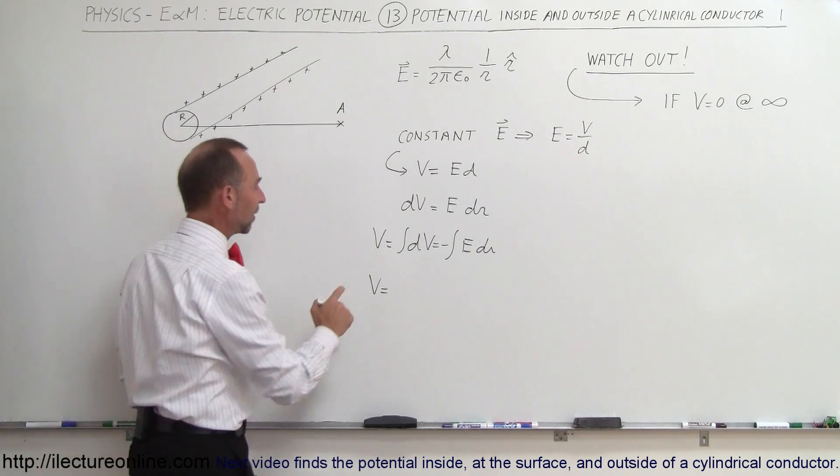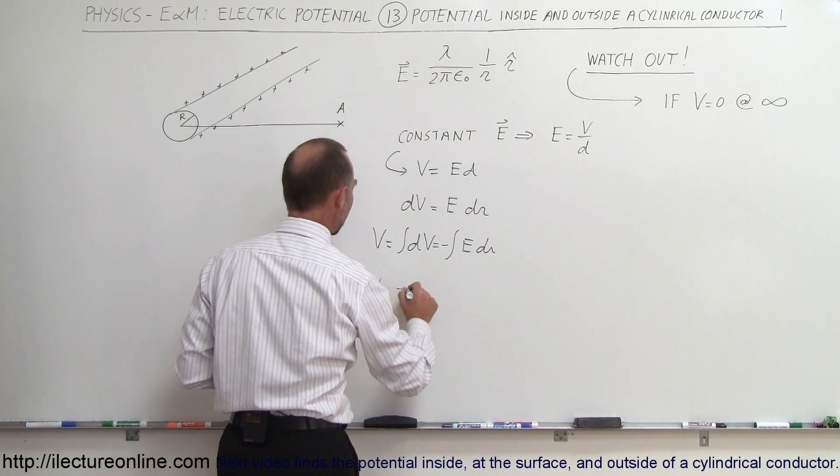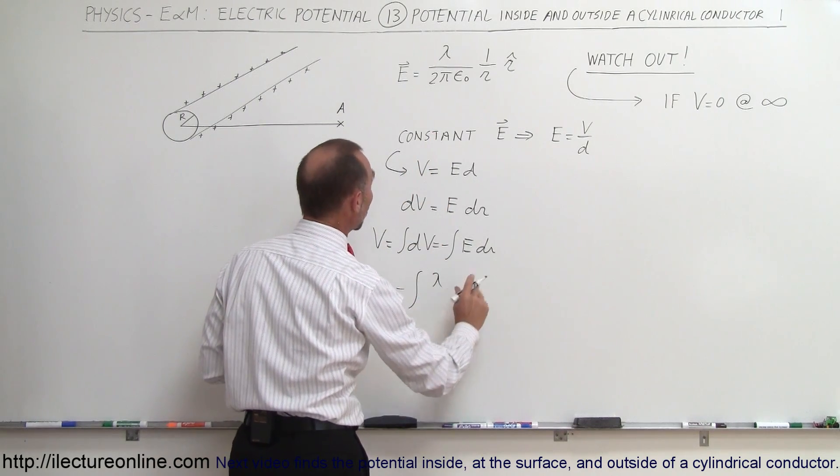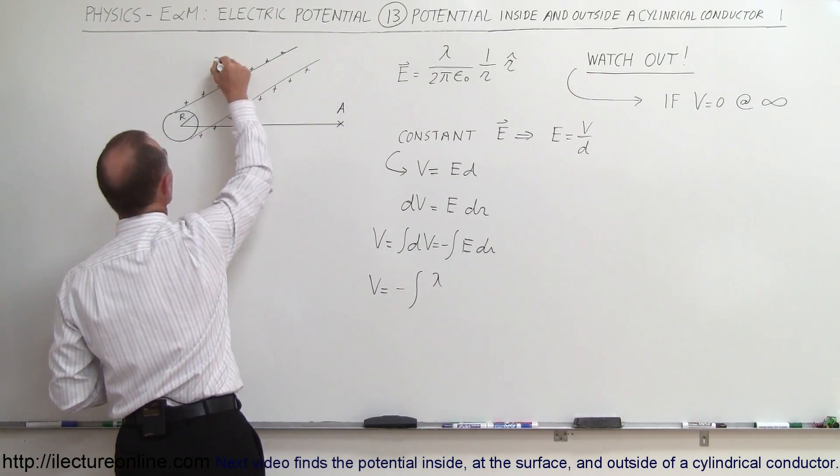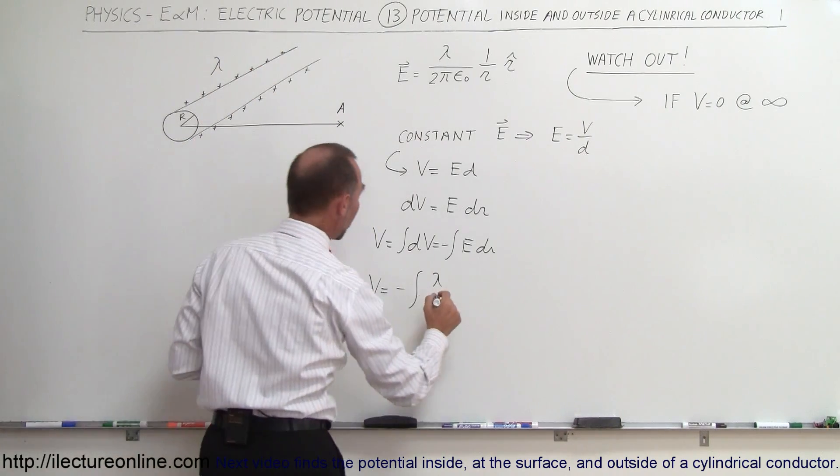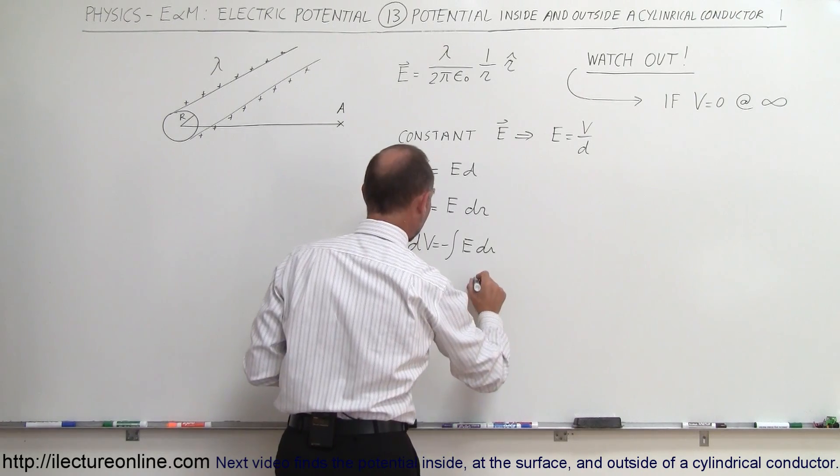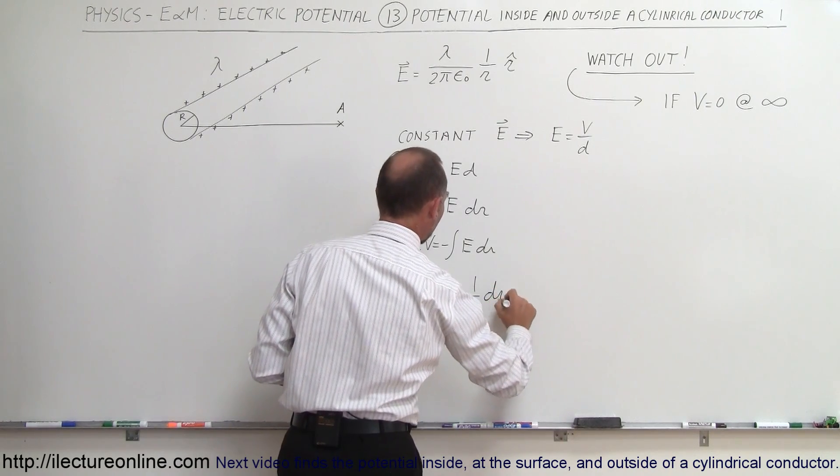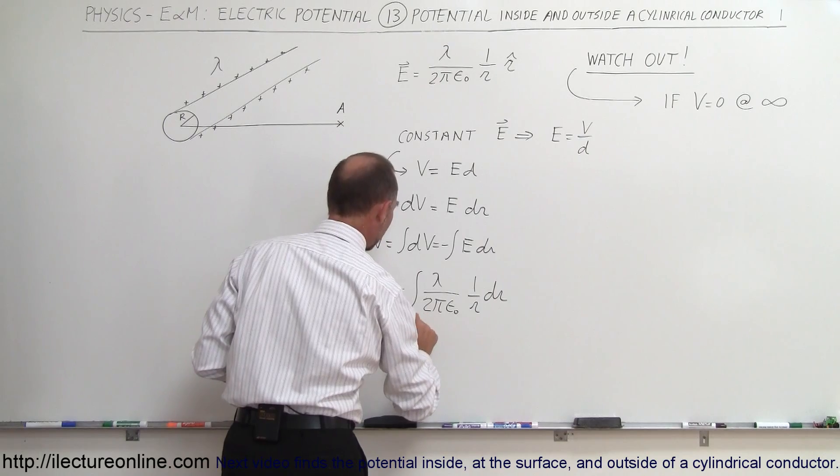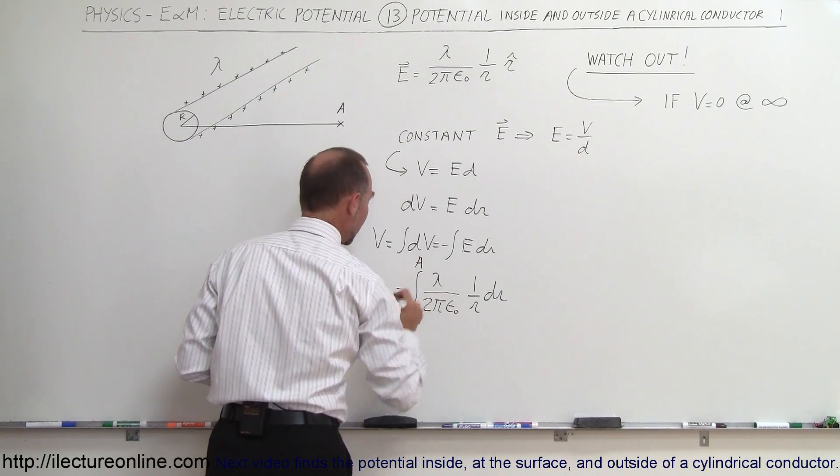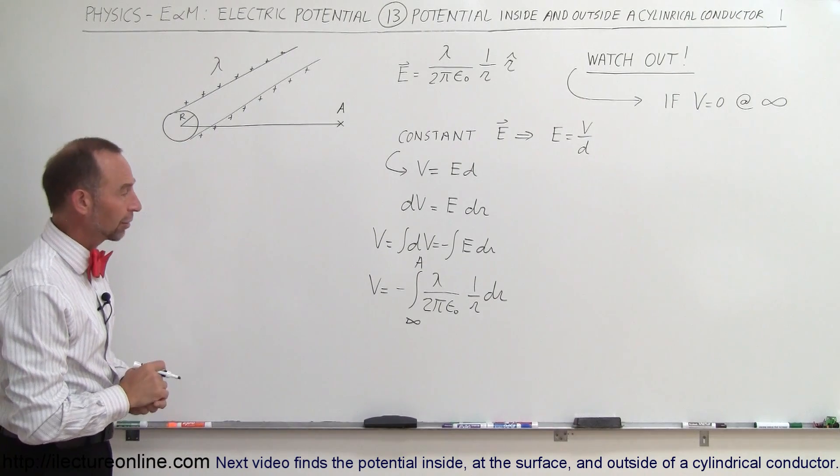So now what we have is that V is going to be equal to the negative of the integral of lambda, that would be the linear charge density, so lambda here is the charge per unit length, divided by 2π epsilon nought times 1 over r dr, and we're going to integrate from infinity to a point, let's call it A, away from the conductor.